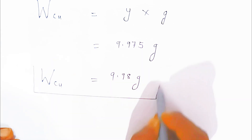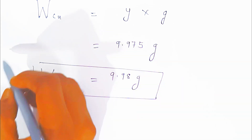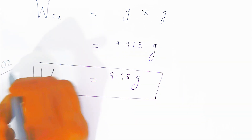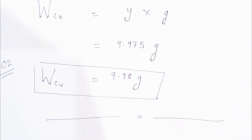This is how you calculate the weight of copper deposited at the cathode — very simple, for two marks in a board examination. If you like this video please share it and subscribe. Thank you very much, have a nice day, God bless you.